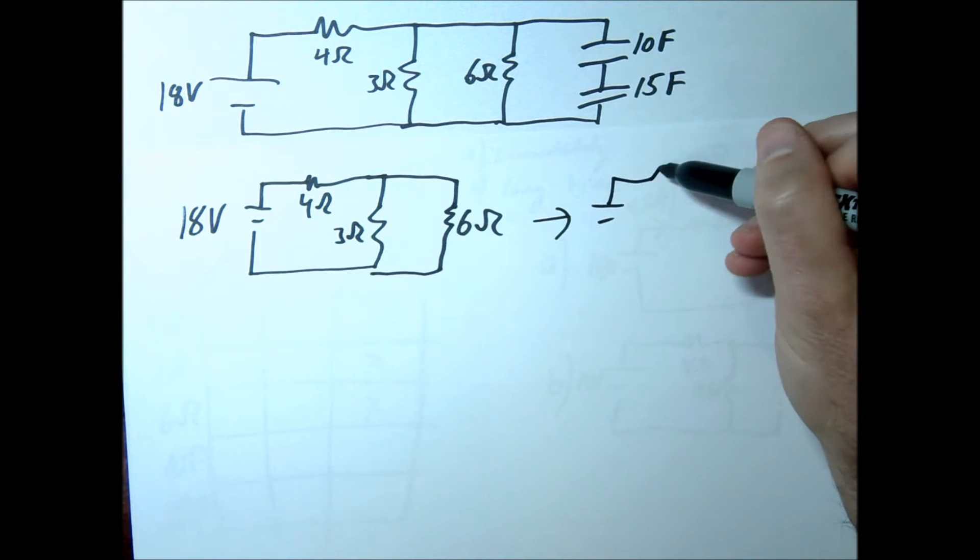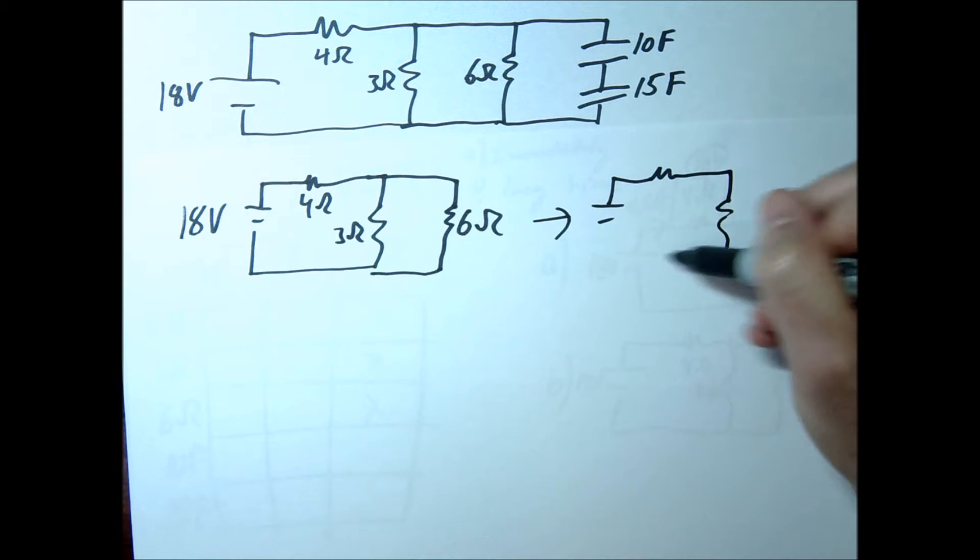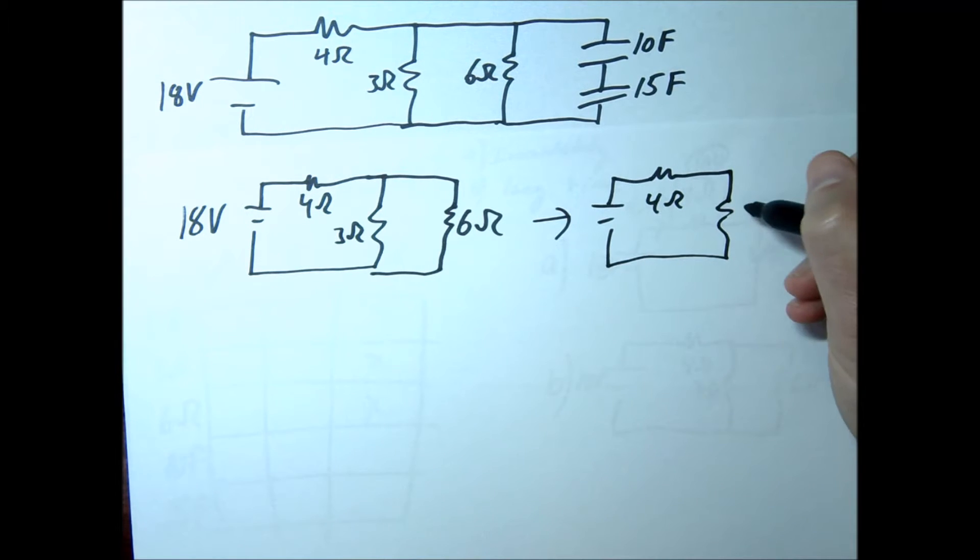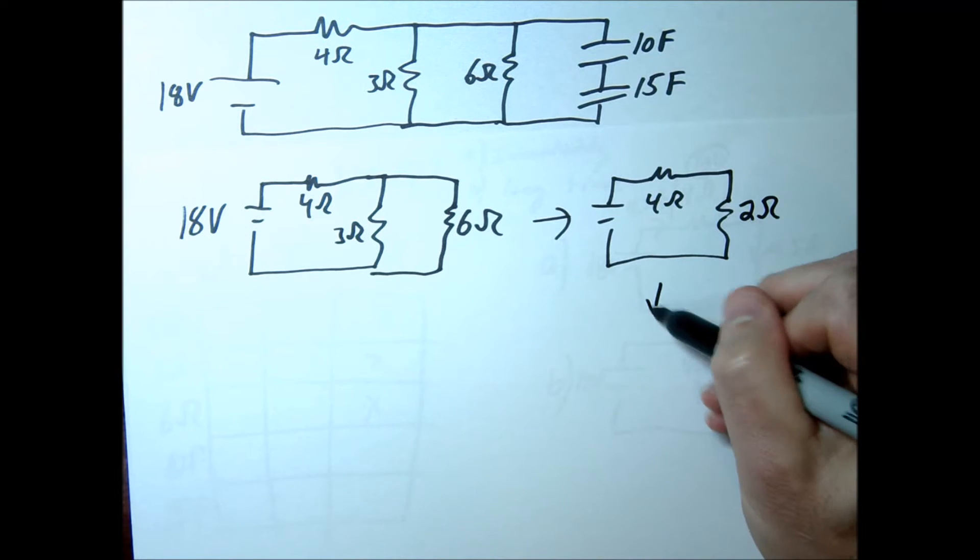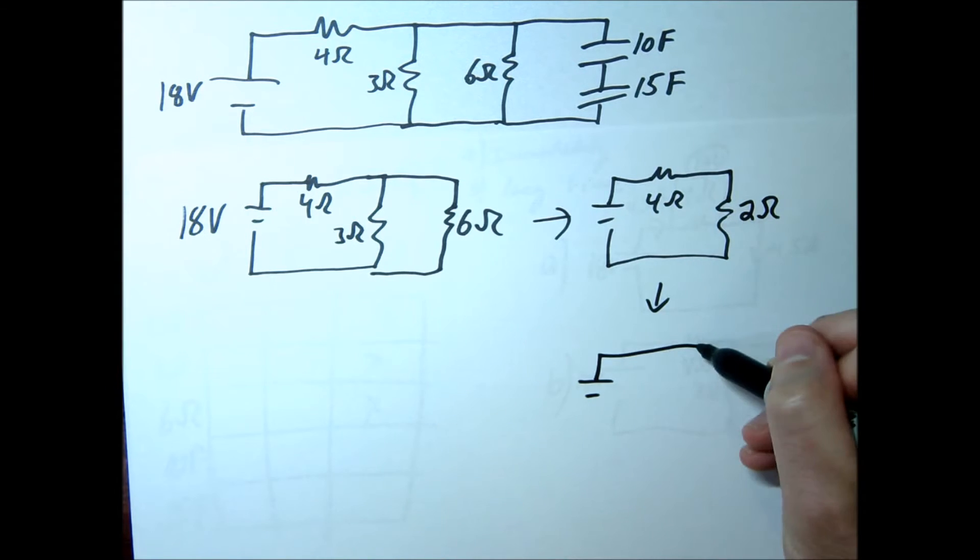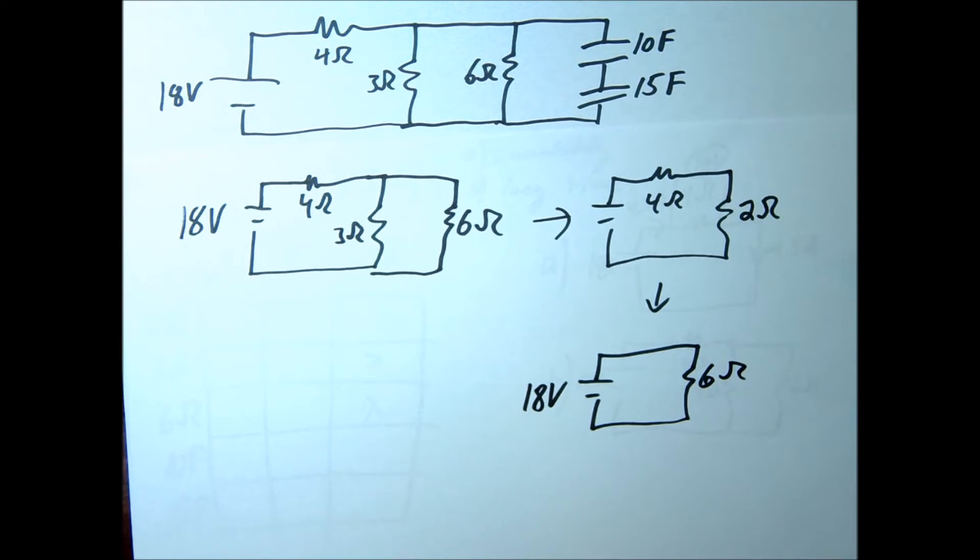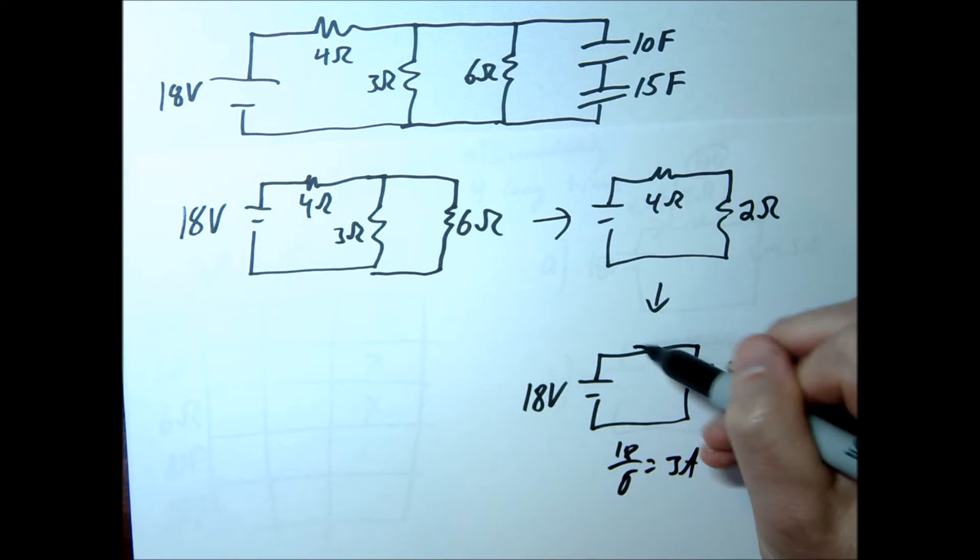Let's go ahead and find the equivalent here. This is going to be 4 ohms. We're going to use 1 over 3 plus 1 over 6 equals 1 over R. When you do that, you should get 2 ohms here. And then we'll go one more step further, and these are in series, so we're just going to add those up. So we're going to get 6 ohms here. This was 18 volts. We're going to now work our way around the circuit.